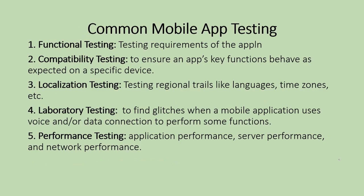Next are common mobile app testing types. Just as we do for websites, we have to do all types of testing for mobile apps. The first one is Functional Testing — we verify that a specific application works according to its set of requirements and that all functionalities work correctly. The second is Compatibility Testing — the device should be compatible with the application; for example, Android and Windows compatibility. The third is Localization Testing — this means regional testing covering languages, time zones, cultures, currencies, etc.